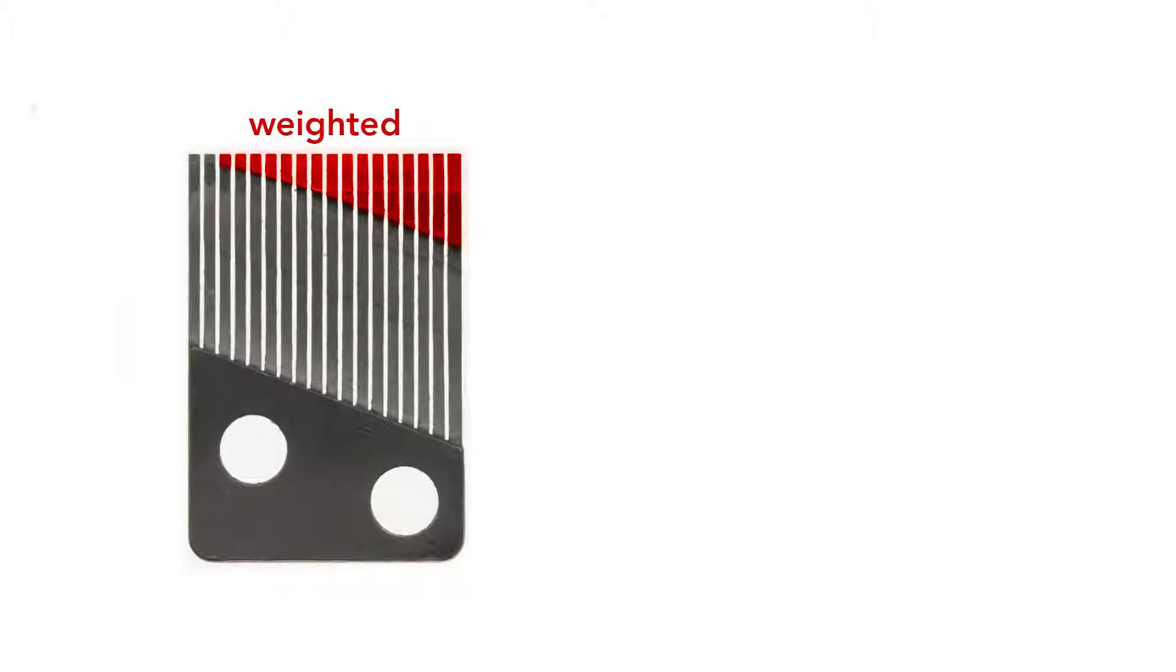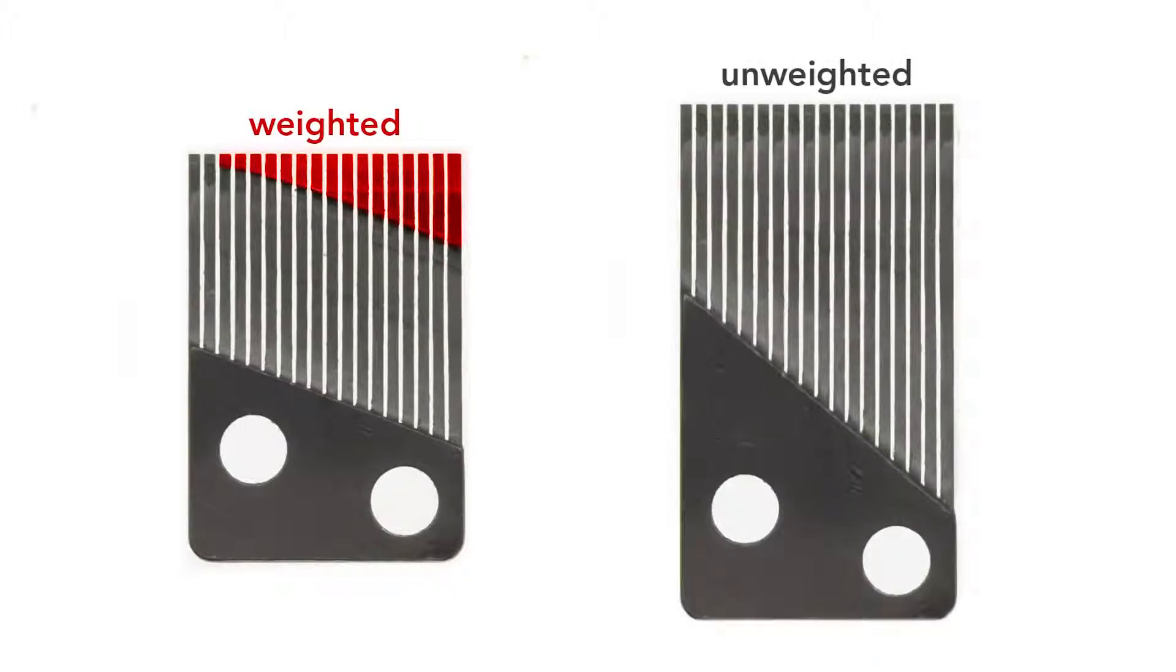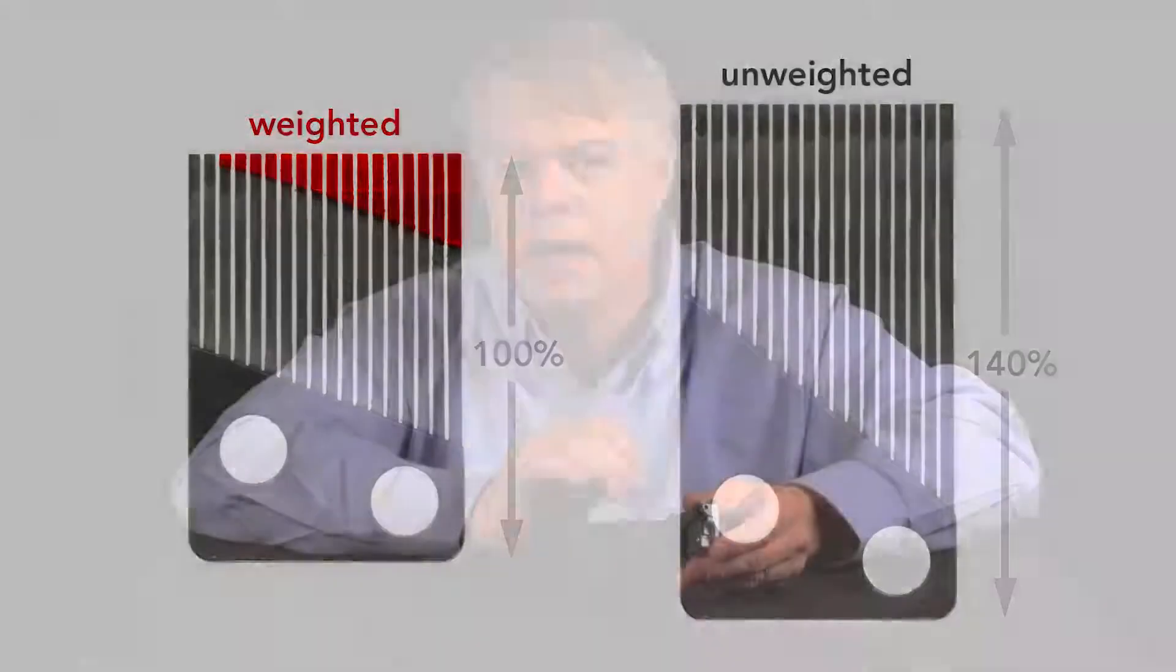For this particular design, if the comb were unweighted, it would have to be roughly 40% longer to produce the same range of frequencies. Another advantage of the weighting is that the combs can be mass-manufactured in a single size. You just cut away the proper amount of material to produce a unique set of notes.